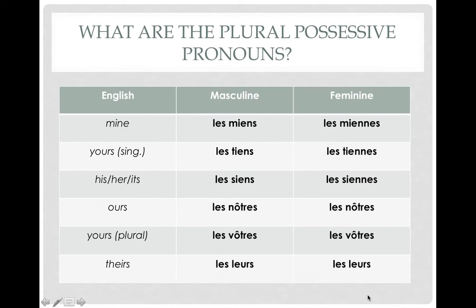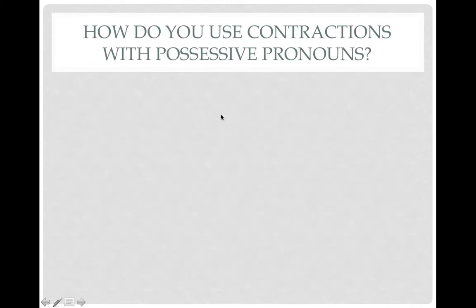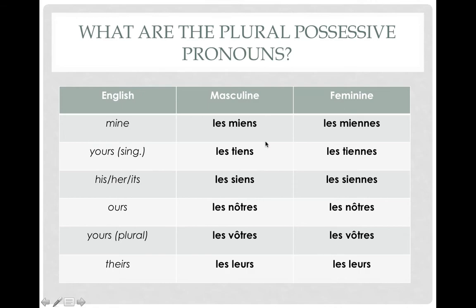The plural ones should look pretty familiar — just add an s at the end of each one. We have masculine and feminine forms, and as a reminder, we do not pronounce this s at the end. So les miens, les miennes, les tiens, les tiennes — they'll all sound the same as the singular. And remember, even if you're talking about 'mine,' if you're referring to more than one object, you need to use the plural possessive pronoun.